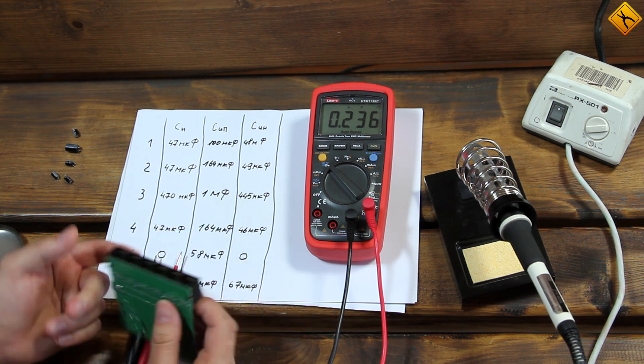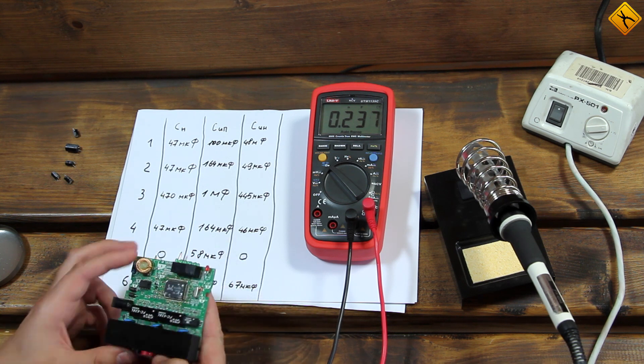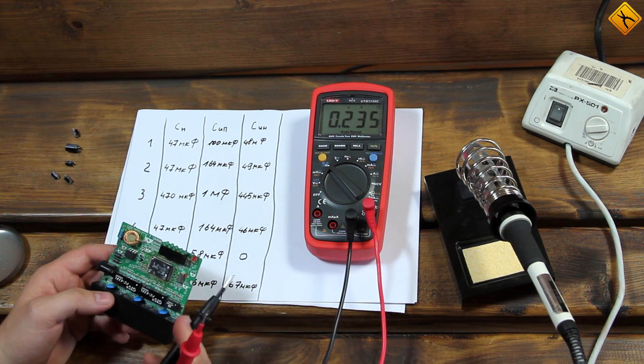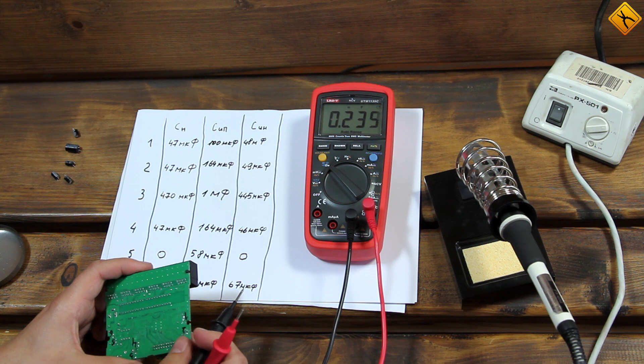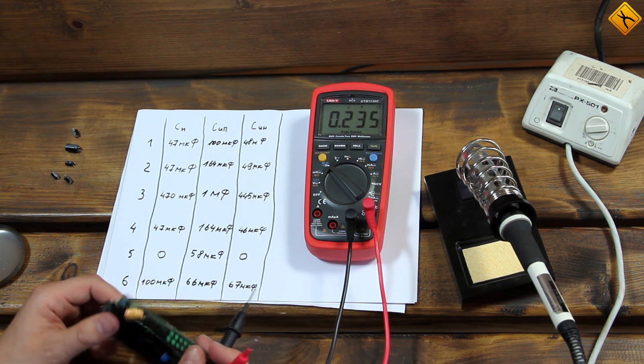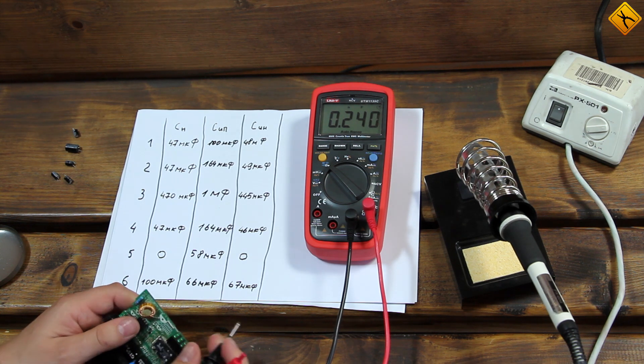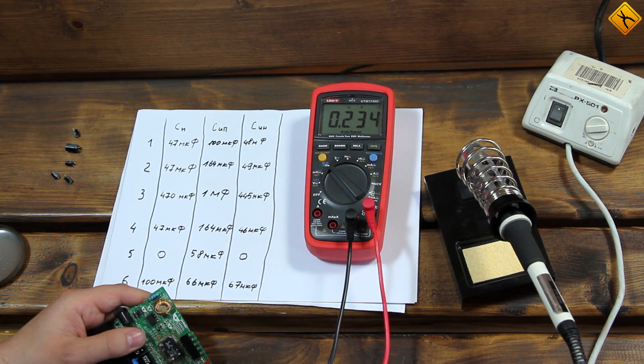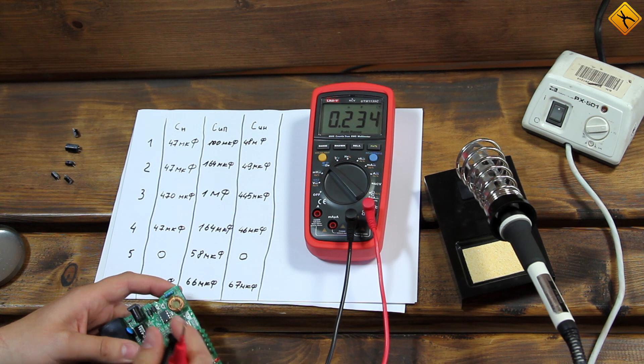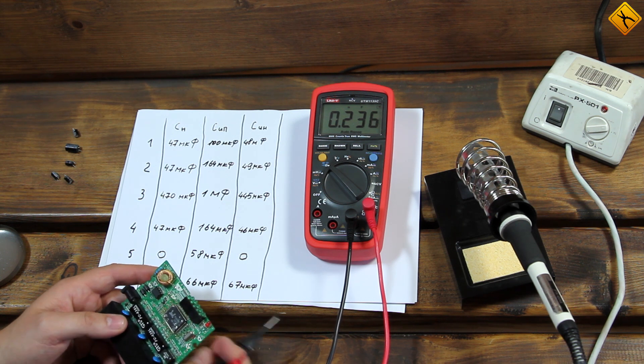Secondly, what is ESR? It's basically a series of resistances. Therefore, no matter what you use for your measurements, even if it's the best device for measuring capacitance, you cannot measure the ESR of an individual capacitor. Instead, you will end up measuring an equivalent value of the entire circuit.